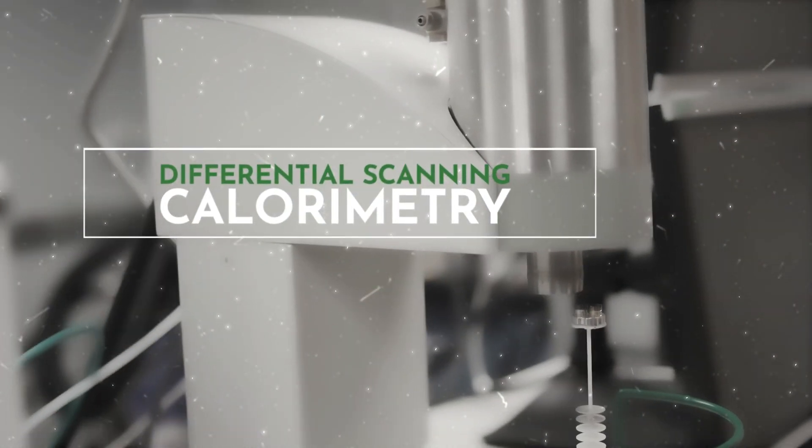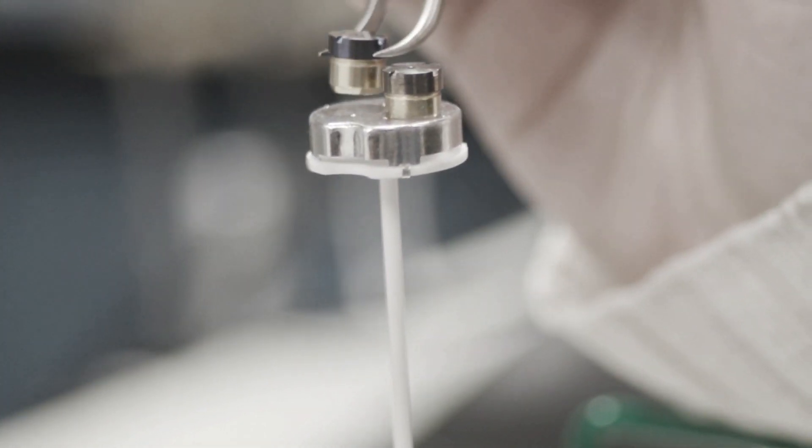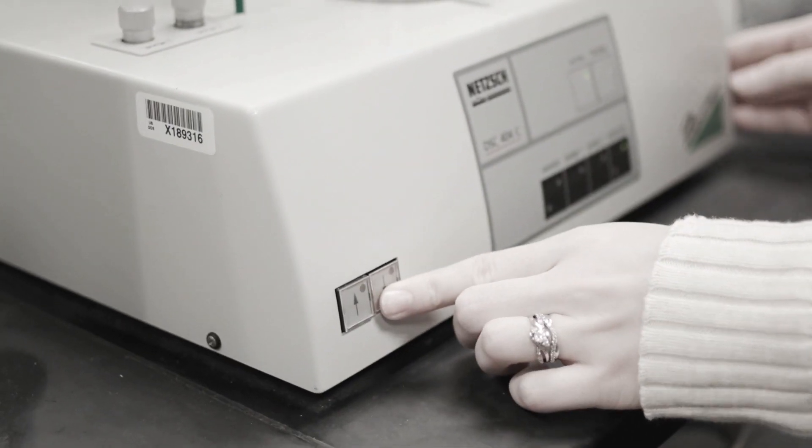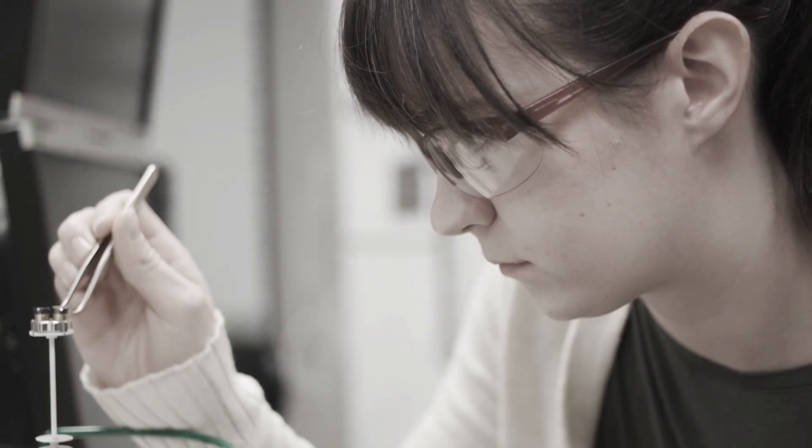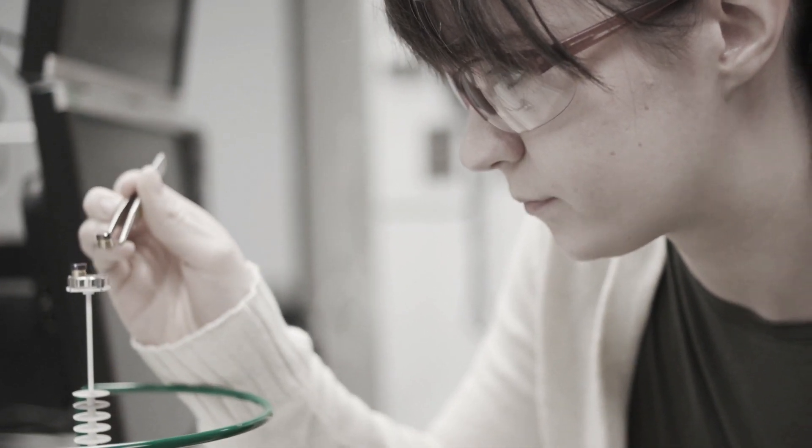It's also really important to look at the heat capacity for the coolant and fuel salts. I'm using a differential scanning calorimeter to be able to determine what the melting points and the heat capacities are for the different salts. The one I'm working on right now is the coolant salt.